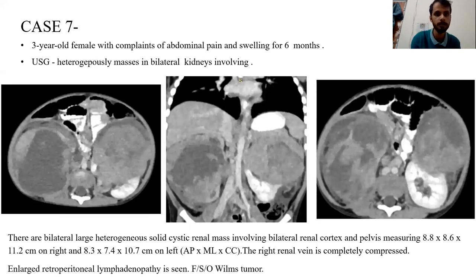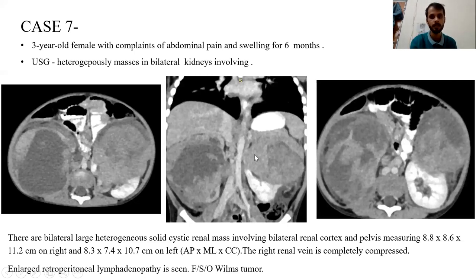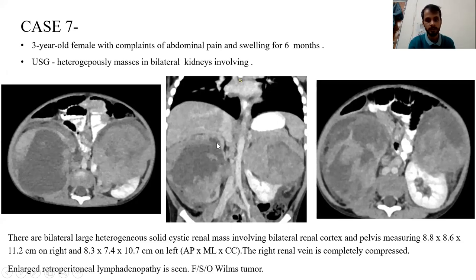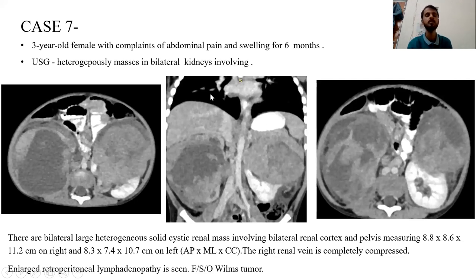Case 7: A 3-year-old boy with complaints of abdominal pain and swelling for the last six months. Ultrasound shows heterogeneous masses in bilateral kidneys. On axial and coronal CT images, both kidneys are replaced by large solid-cystic heterogeneous masses, approximately 10 x 8 x 9 cm in both kidneys. The right renal vein cannot be visualized, suggesting compression. Multiple enlarged retroperitoneal lymph nodes are also seen. This is a Wilms tumor.